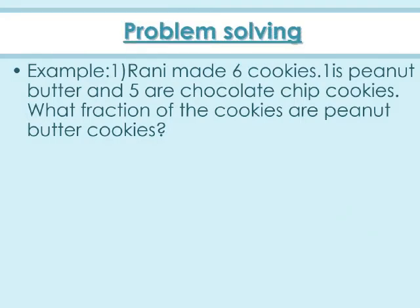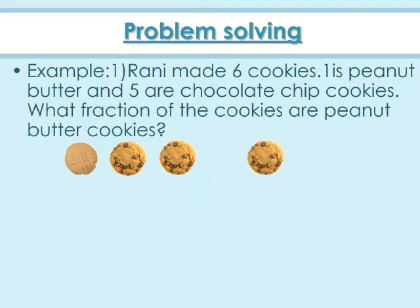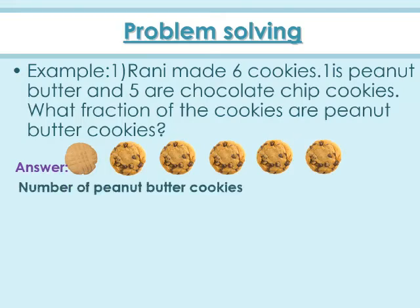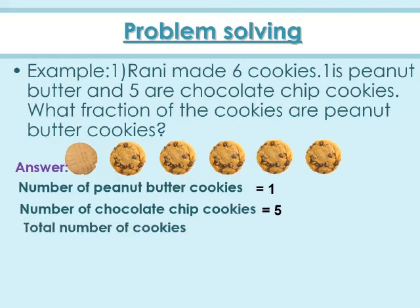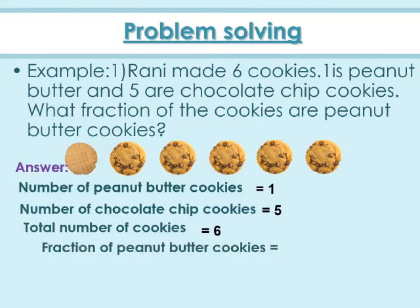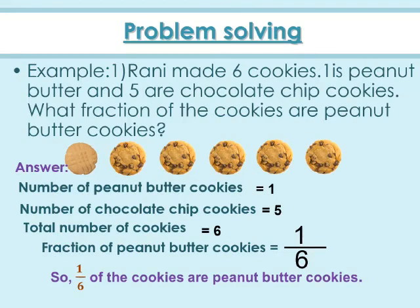Now let us solve a few real-life problems on fractions. Example 1: Rani made 6 cookies — 1 is peanut butter and 5 are chocolate chip. What fraction of the cookies are peanut butter? The total number of cookies is 6. The fraction of peanut butter cookies is number of peanut butter cookies by total cookies, that is 1 by 6. So 1 sixth of the cookies are peanut butter cookies.